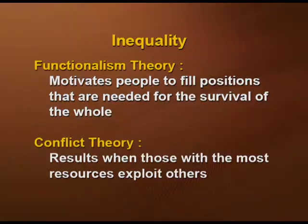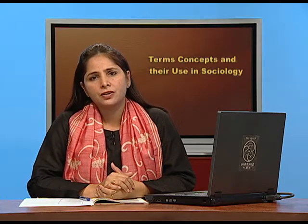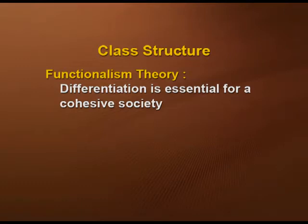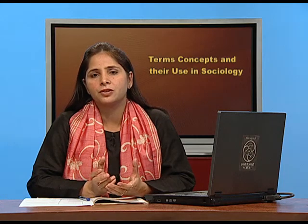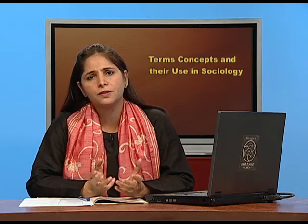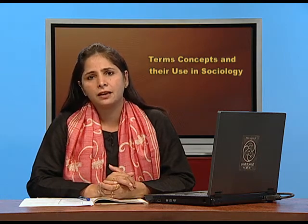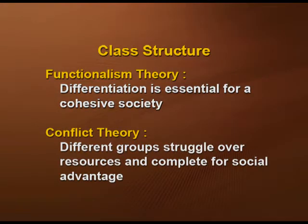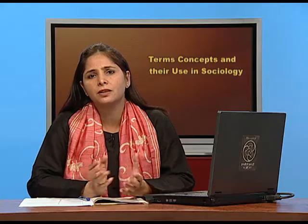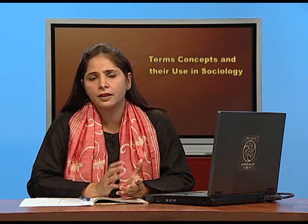Functionalism says different parts of society work in coordination, and vacant positions can be fulfilled as needed. The conflict theory, by contrast, says that inequality results when those with the most resources exploit others. For class structure, functionalism argues that differentiation is essential for a cohesive society, while conflict theory argues that different groups struggle over resources and compete for social advantage. This is the key difference between functionalism and conflict theory regarding class structure.